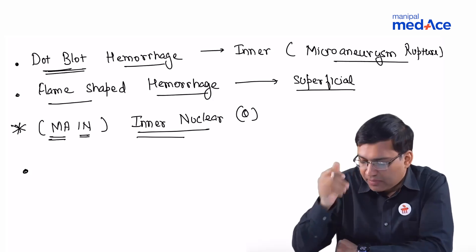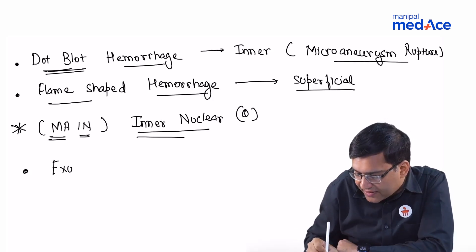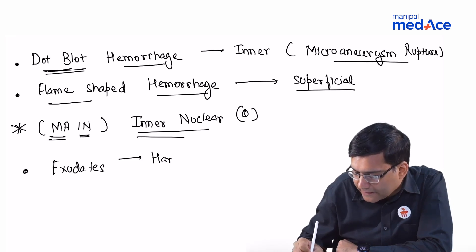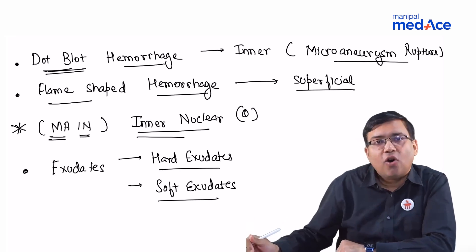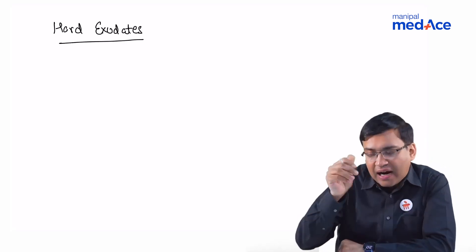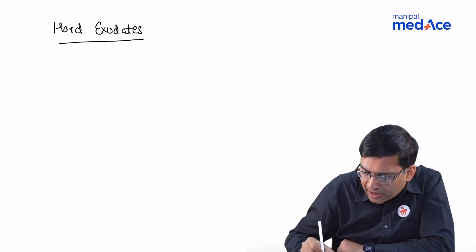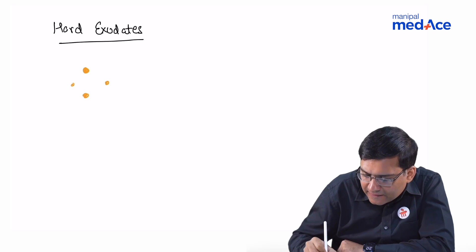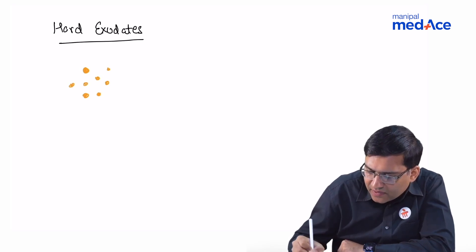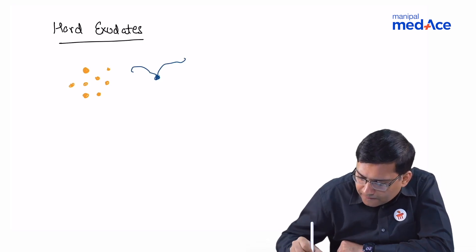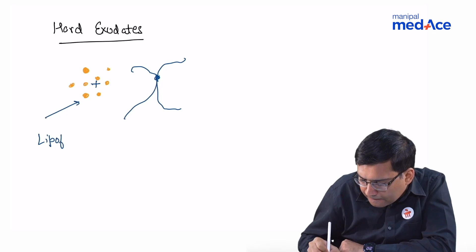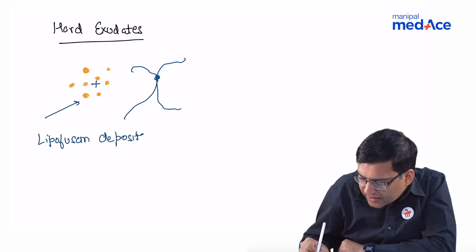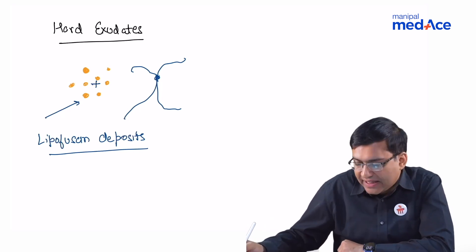The next ocular manifestation to remember is exudates, which can be hard exudates or soft exudates. Hard exudates have distinct margins and are seen in the inner layers of the retina around the macula. They are lipofuscin deposits in the inner layers of the retina.